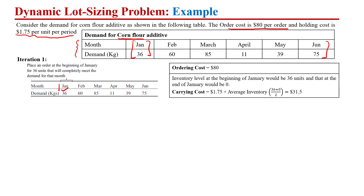In January, if we place an order of 36 — which equals the demand — the order cost is $80. Then we need to calculate the carrying cost. There are two ways to calculate it: using the inventory at the end of the month, or using the average inventory in the time period multiplied by the carrying cost per unit. We are using the average inventory approach. At the start of this month we have no initial inventory, so it is 0. The inventory ordered is 36, so: (36 + 0) / 2 = 18.